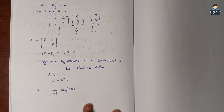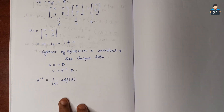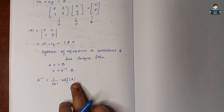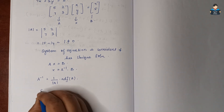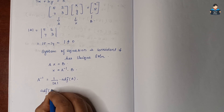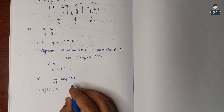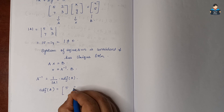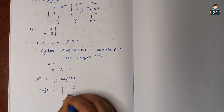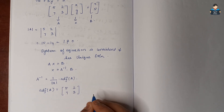We will solve for A inverse. First, A inverse equals 1 over determinant of A into adjoint of A. Determinant of A is finished. Now adjoint of A, we will find out. So matrix A is [5, 2; 7, 3].